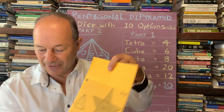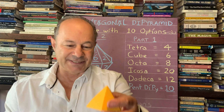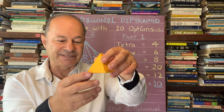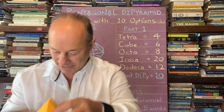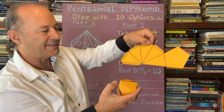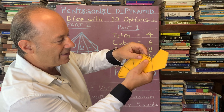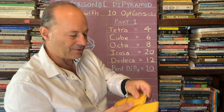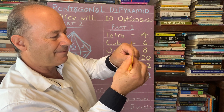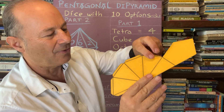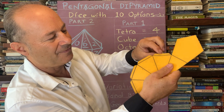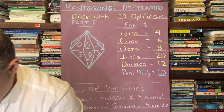If you put two pentagonal pyramids together you get a more diamond-like form — there are different frequencies and variations. Here's another net with little tabs that need to be scored and folded back and forth so they move. Folding all those tabs makes the pyramid.